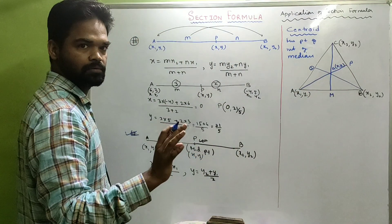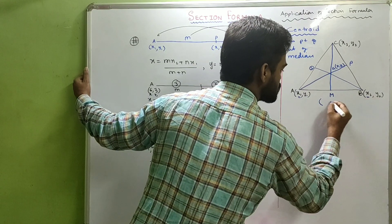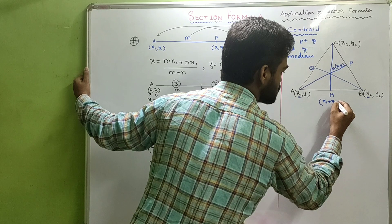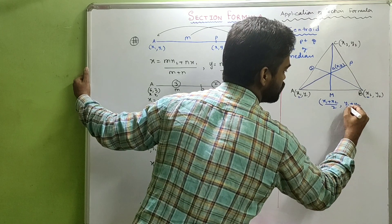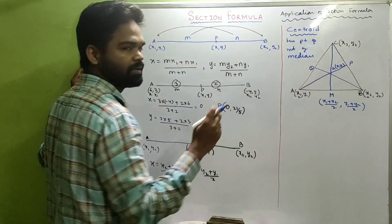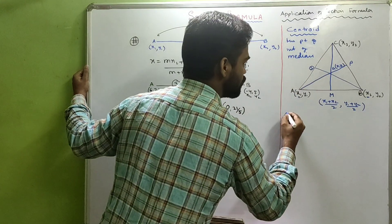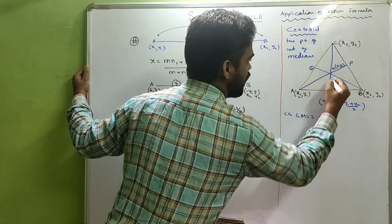Which means, suppose if CM is the median, AP is the median, and BQ is the median, and the point of intersection is G, whose coordinate is (X, Y). So, how will you get X, Y? First of all, M is the midpoint of AB, which means the coordinate of M will be (X1 plus X2 by 2, Y1 plus Y2 by 2). We have just done it.